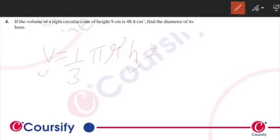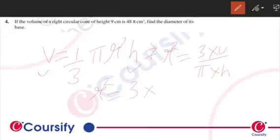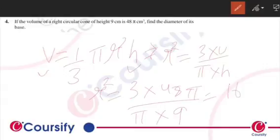So for the radius, r² is equal to 3 × V ÷ (π × h). This will be equal to 3 × V, that is 48π, divided by π × h, that is 9. So r² will be 16.